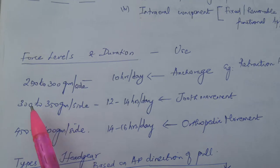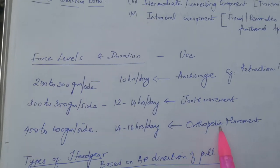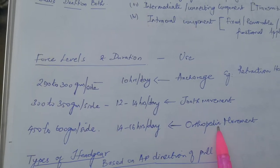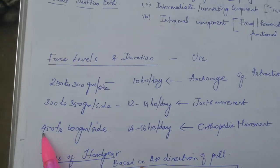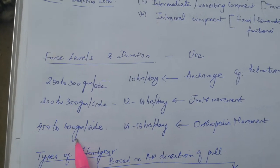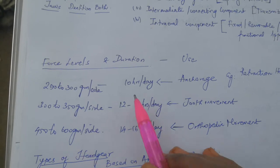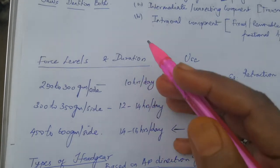For tooth movement, it's around 300 to 350 grams. For any skeletal discrepancy correction or orthopedic movement, it will be 450 to 600 grams per side.